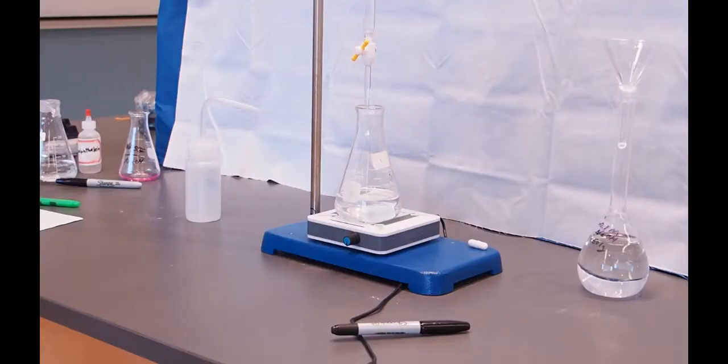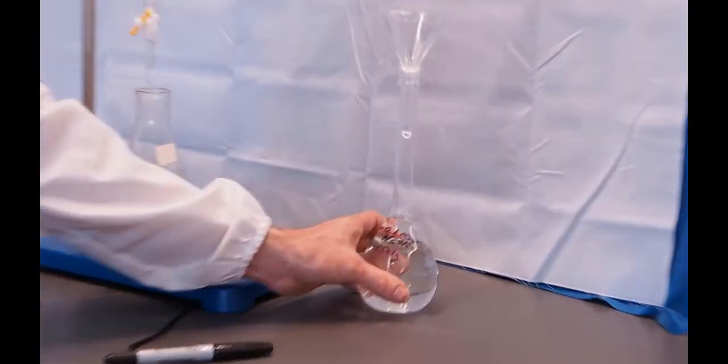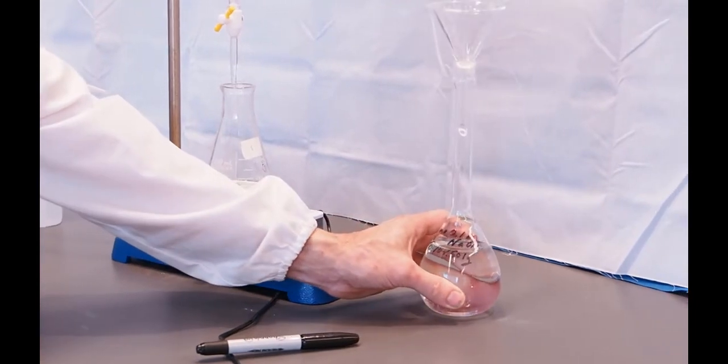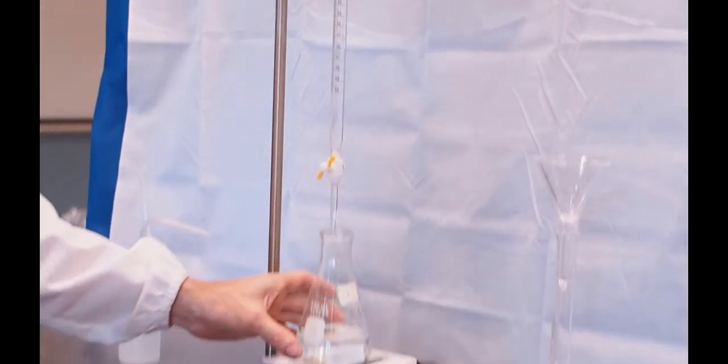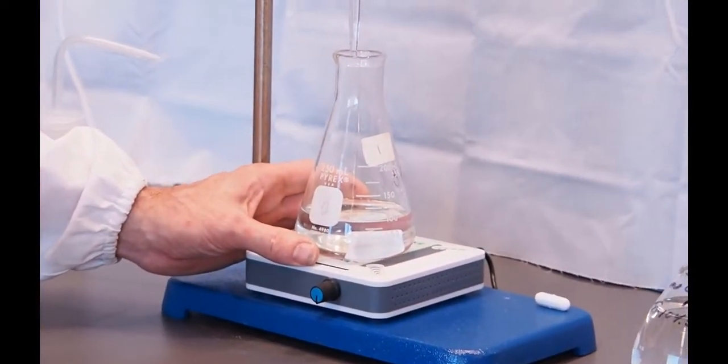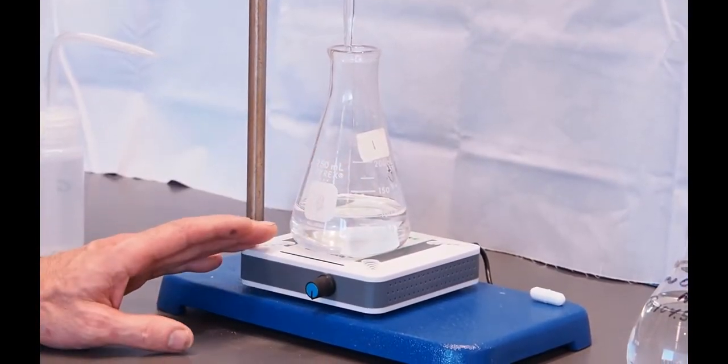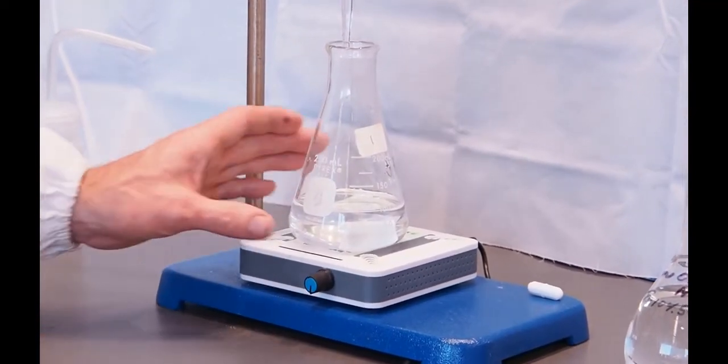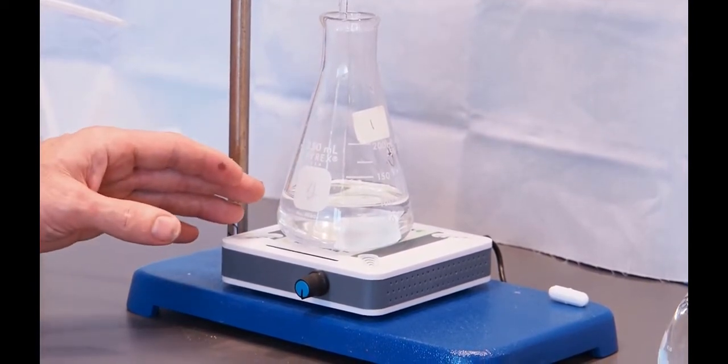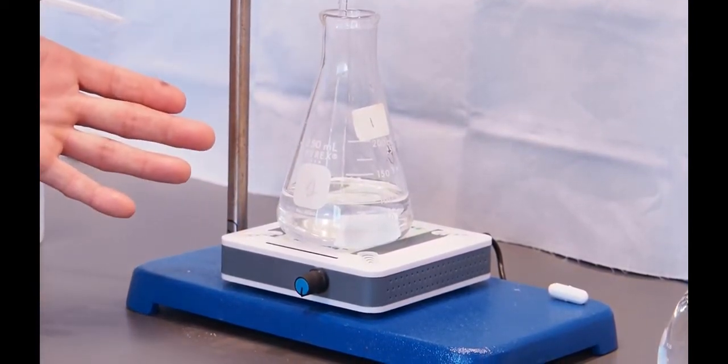All right, for this portion of the experiment, we have got our now standardized sodium hydroxide solution from part one of the experiment. That's loaded back up into the burette. And we have an unknown acid. This is HCl of unknown concentration. I've got 25 milliliters of this HCl solution and 75 mils of water. And two drops of our indicator phenolphthalein. Now we can begin our titration.